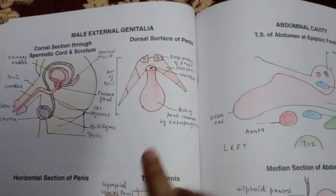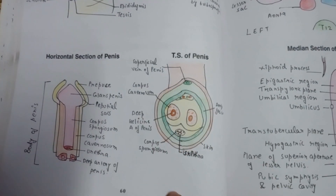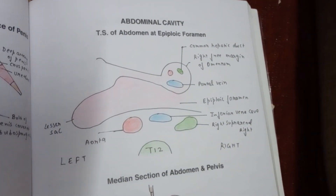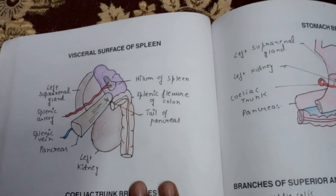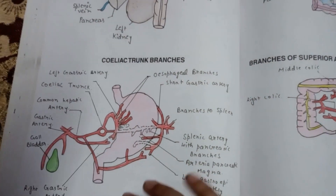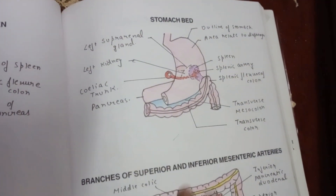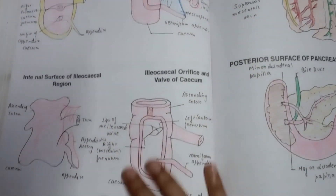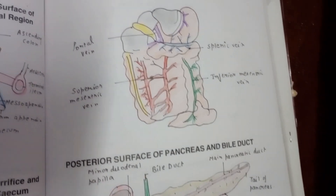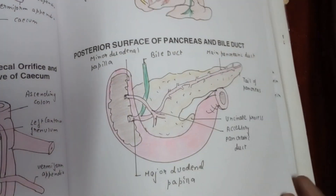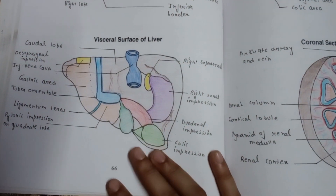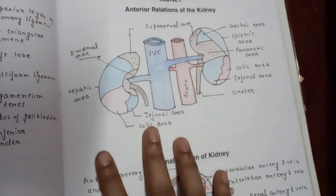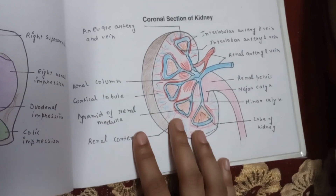This is all about your rectus sheath and male external genitalia. Now here comes the abdominal cavity and median section of your abdomen and pelvis. This is the visceral surface of the spleen. This is the stomach. Portal venous system. The liver — this is the visceral surface of your liver. Kidney and your coronal section of your kidney.